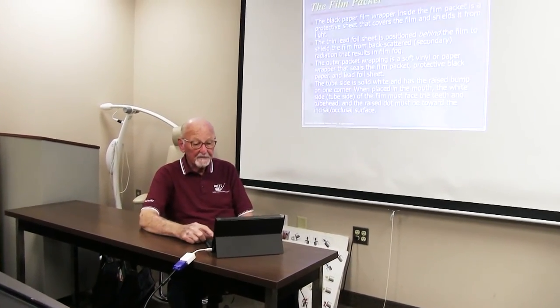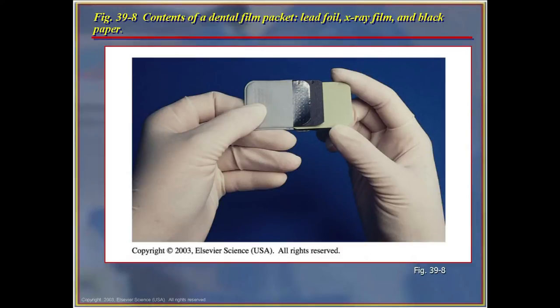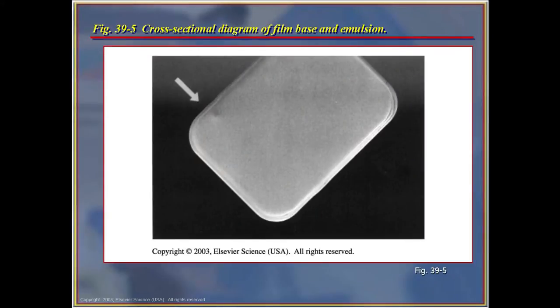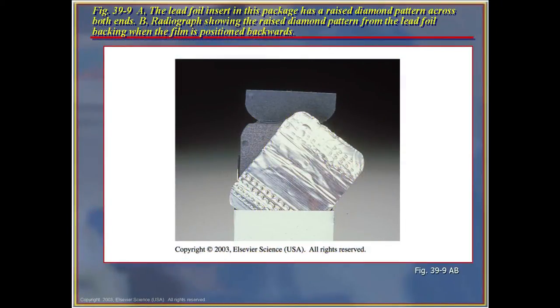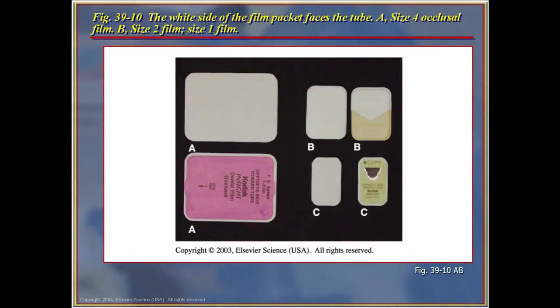Inside the film packet we have the cover — a black paper film wrapper inside the film that is a protective sheet covering the film and shielding it from light. The thin lead foil sheet is positioned behind the film to shield the film from backscatter and secondary radiation. You have to be careful always to place the film with the packet facing toward the exposure rather than reversed. The tab on the back of the film packet always goes away from the exposure or from the tube head. The other packet wrapping is a soft vinyl or paper wrapper that seals the package and protects the black paper and the lead foil sheet.